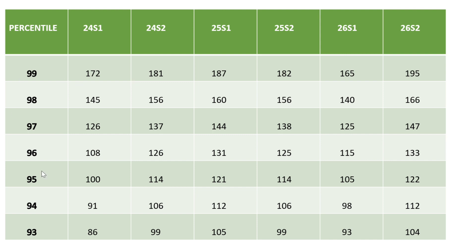These are the percentiles and the marks obtained at that percentile. For example, 172 marks obtained in the 24th session 1 gives 99 percentile. In shift 2, 181 marks gives 99 percentile. In 25th shift 1, 187 marks gives 99 percentile. You can see how many marks correspond to how much percentile across all shifts.